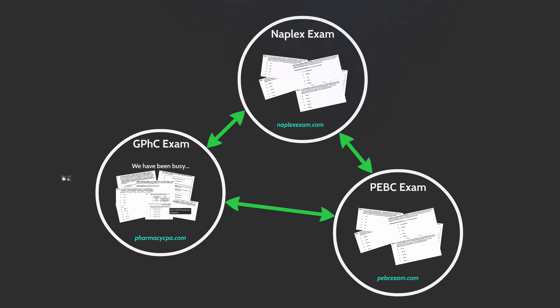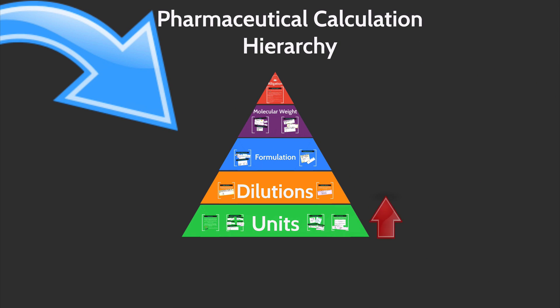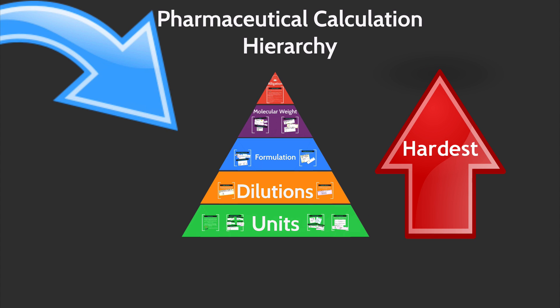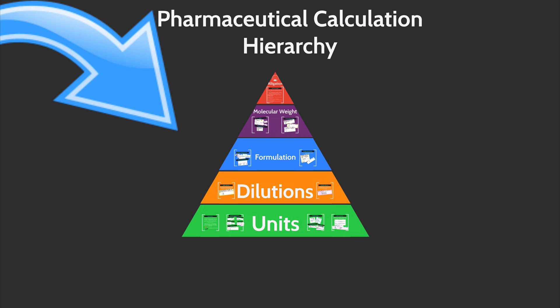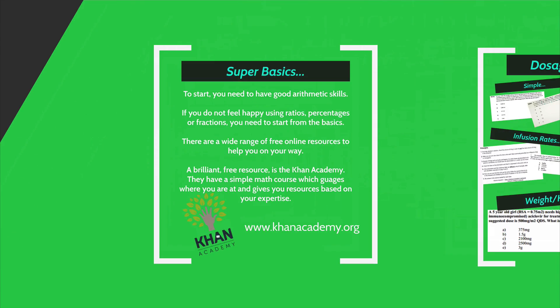We've been looking at similarities and what they have in common in respect to their calculation questions — what do you actually need to know? What we came up with was this: the pharmaceutical calculation hierarchy. It starts off at the bottom with the easiest parts and then works its way up to the top where you have the hardest things. The first and easiest are units.